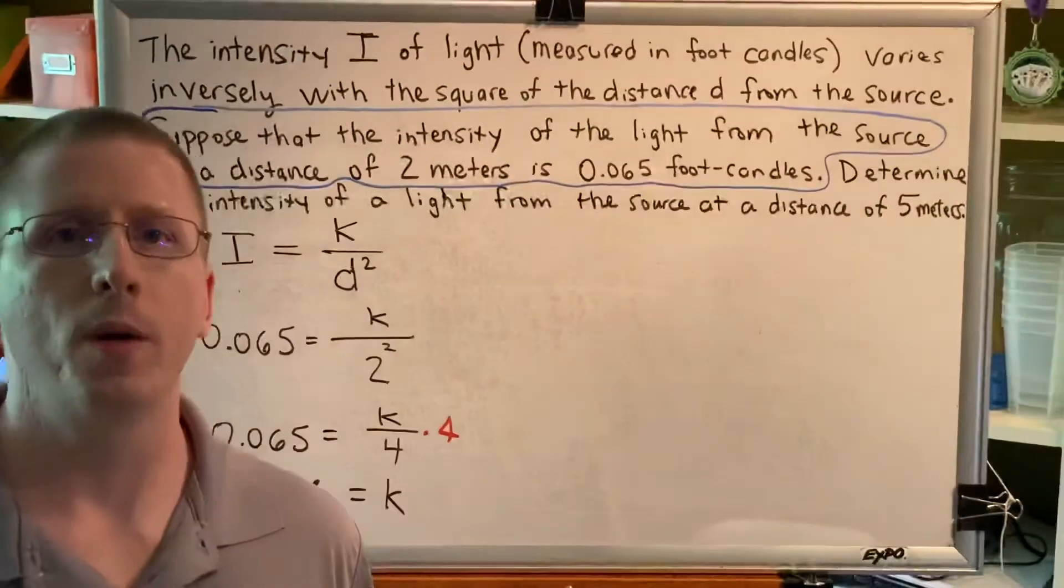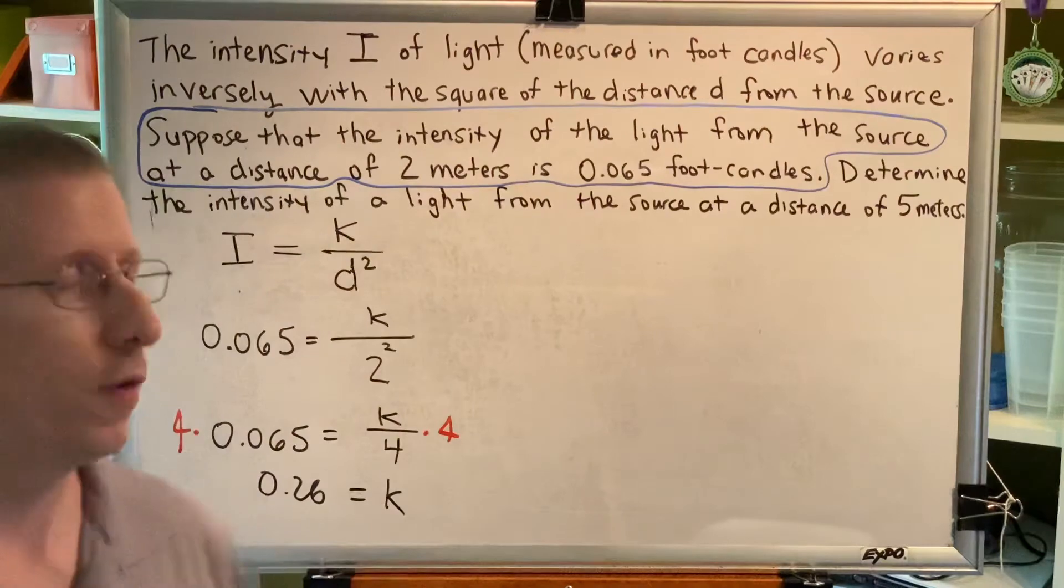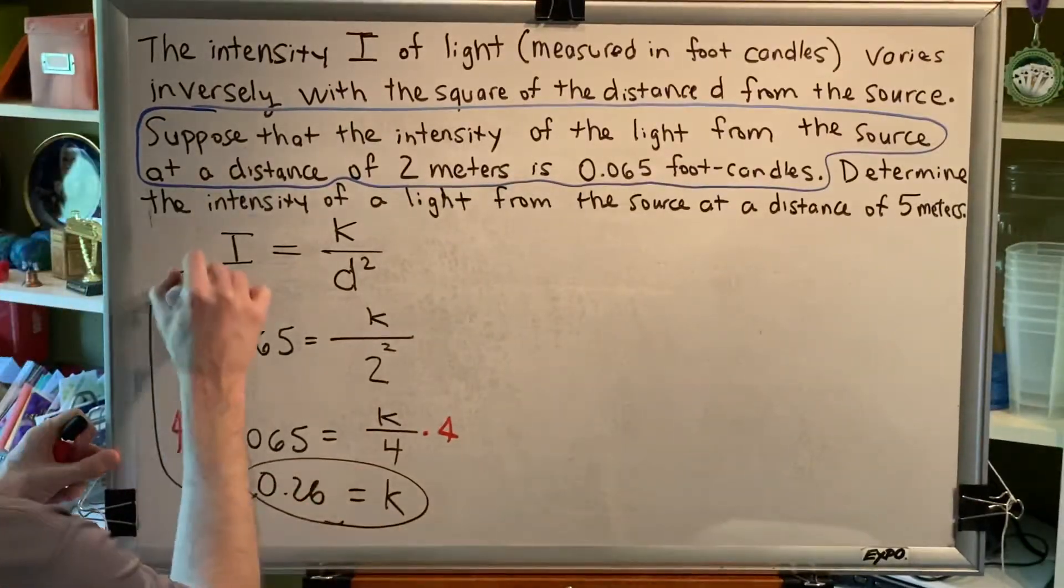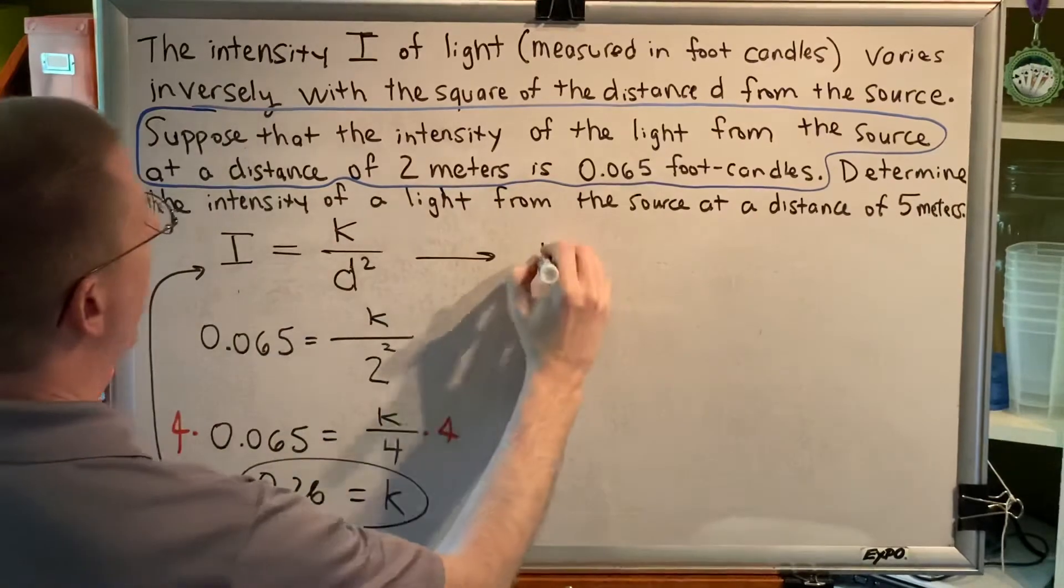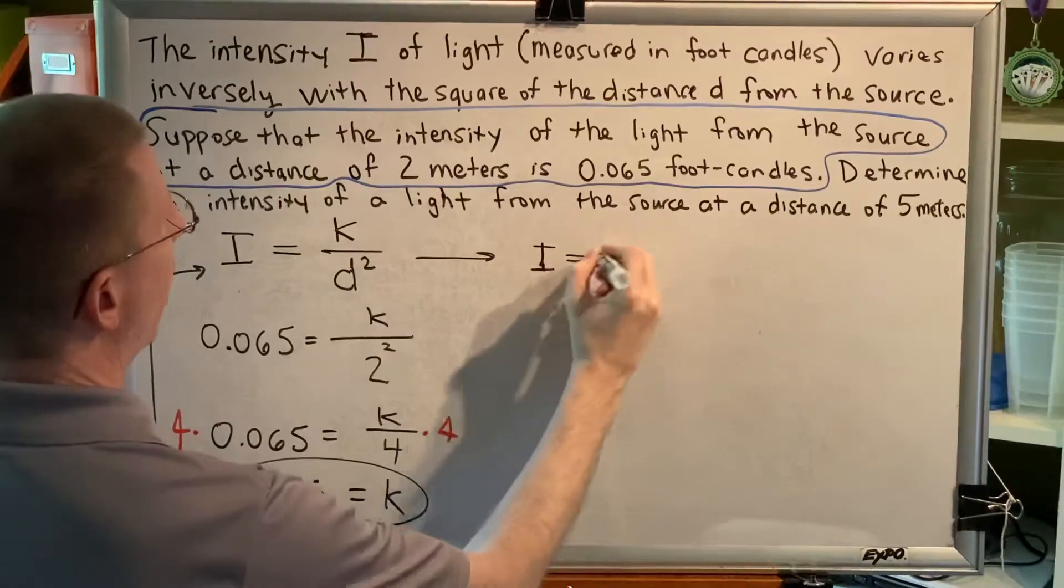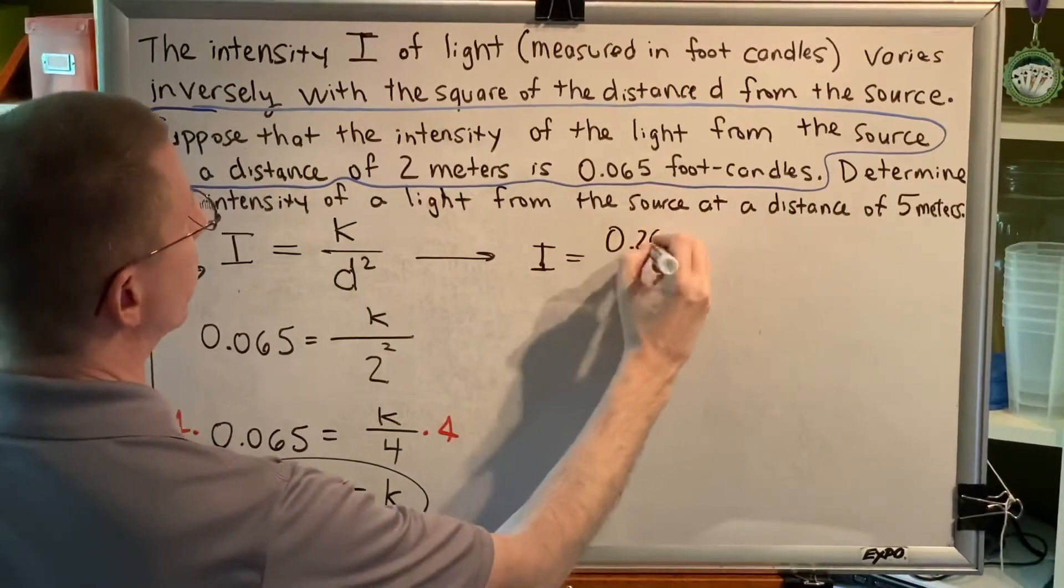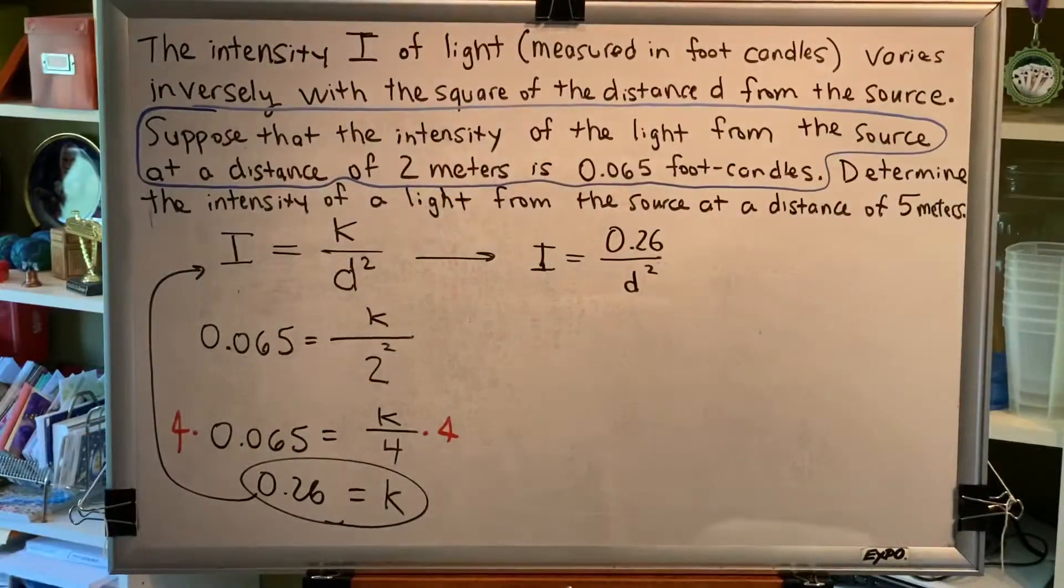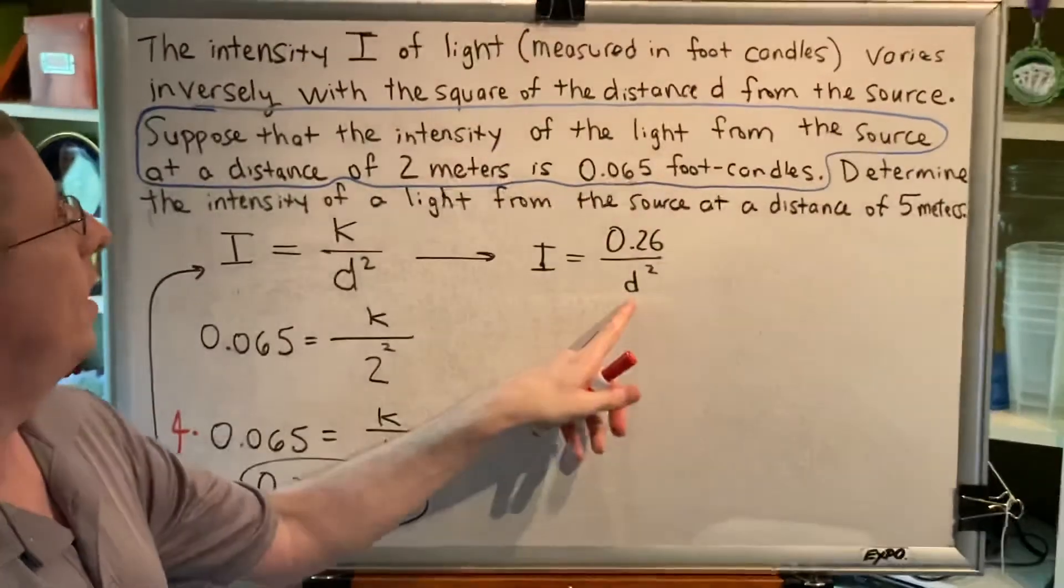For the first time, we are now going to perform step 6, predict the future. So, when you take the value of K and put it into your equation, you get an equation that allows you to predict the future. K is 0.26, so we get I equals 0.26 divided by D squared.